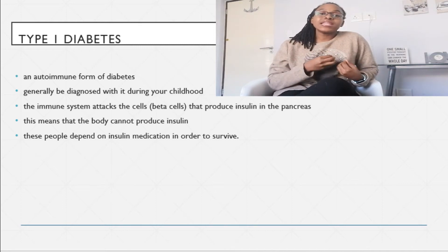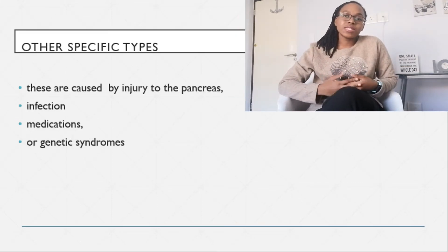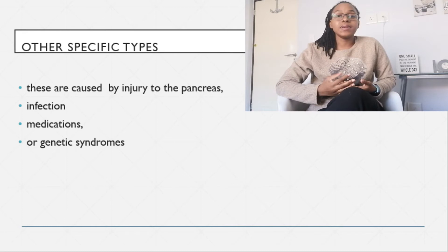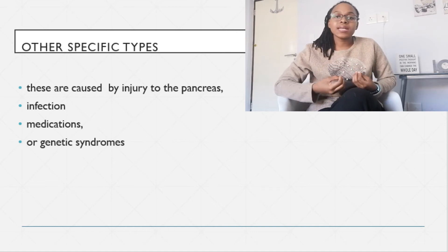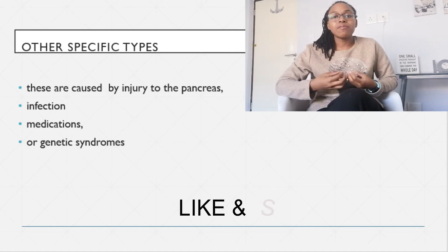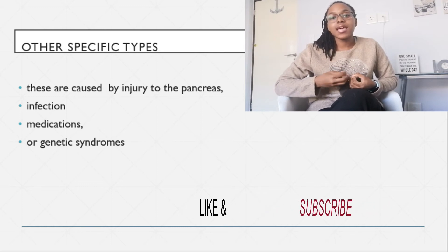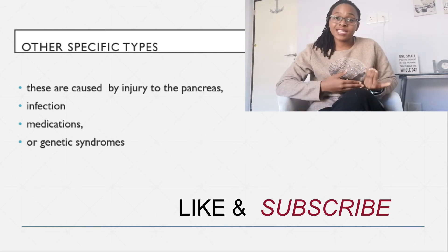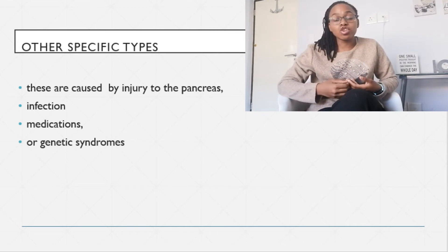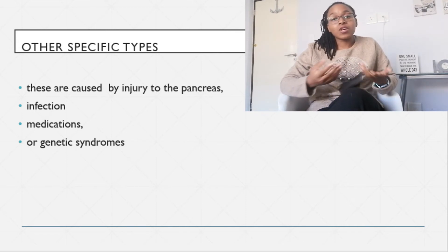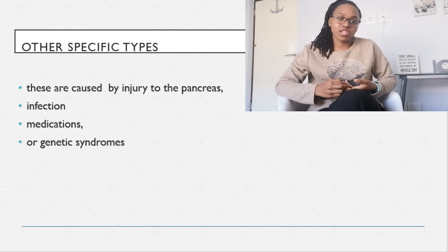In other specific types of diabetes, injury to the pancreas is generally the cause. The pancreas makes insulin, and if it is injured, it may damage the cells that make insulin, leading to a decrease in insulin in the blood as seen in type 1 diabetes. This will then lead to excess glucose in the blood because your body cannot produce enough insulin.